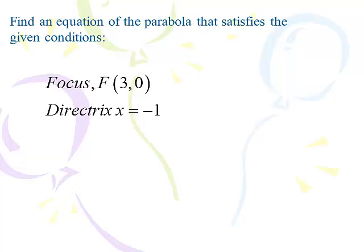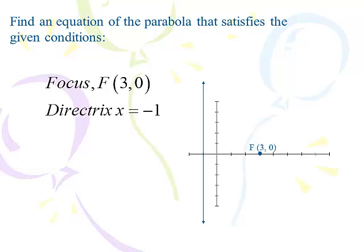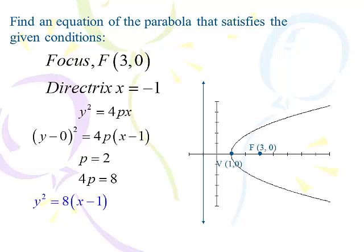They give us a focus at (3, 0) and a directrix x equals negative 1. My suggestion is always to graph them — you'll be surprised how easily you find the vertex. I put in the line x equals negative 1; there's my directrix. My focus is (3, 0), that's on the x-axis. The vertex has to be halfway between the directrix and the focus. There are 4 units between them, so 4 divided by 2 is 2. I mark off 2 units and that puts me at (1, 0). The parabola opens to the right because it has to wrap around the focus.